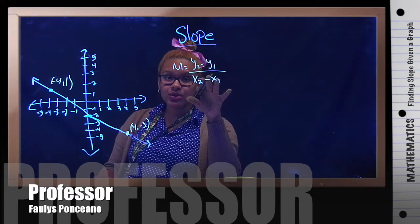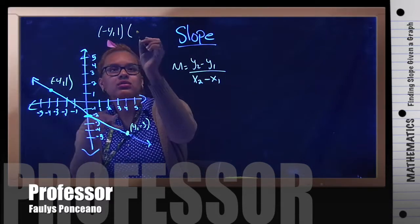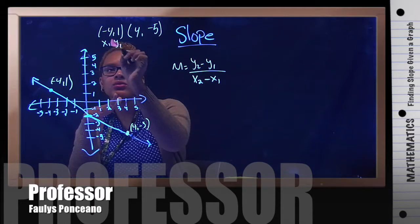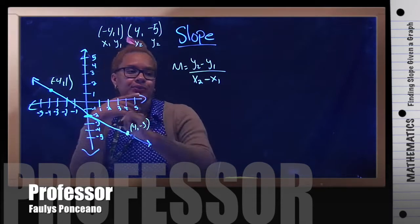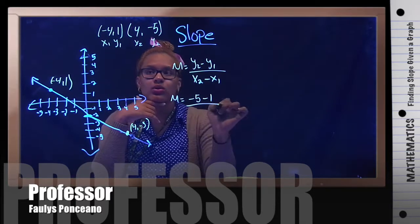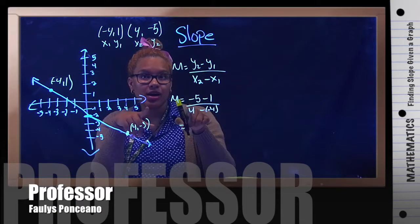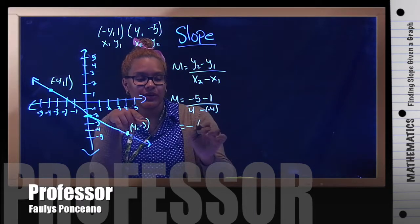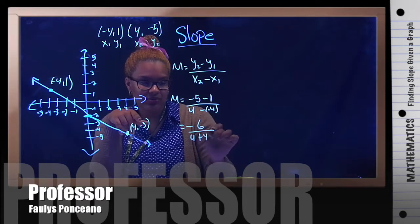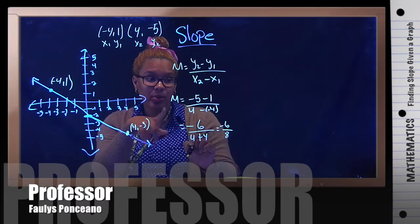Then you use the slope formula: m equals y2 minus y1 over x2 minus x1. To use this formula you need the two points, which are negative 4 comma 1 and 4 comma negative 5. Label your points x1, y1, x2, y2, then substitute: negative 5 minus 1 over 4 minus negative 4. That gives you negative 6 over 8. You can simplify by dividing top and bottom by 2, giving you negative 3 over 4.